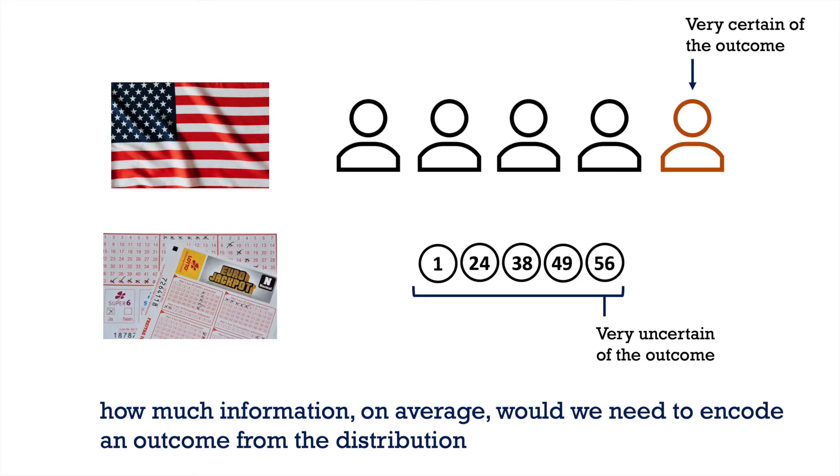This idea of information may be confusing, so let's introduce a setup that may explain what we mean by this. Imagine that we are on one side of a wall where a random outcome occurs. The outcome is drawn from some underlying random probability distribution. We can observe the outcome of the event, however, there's another person on the other side of the wall who cannot observe the outcome.